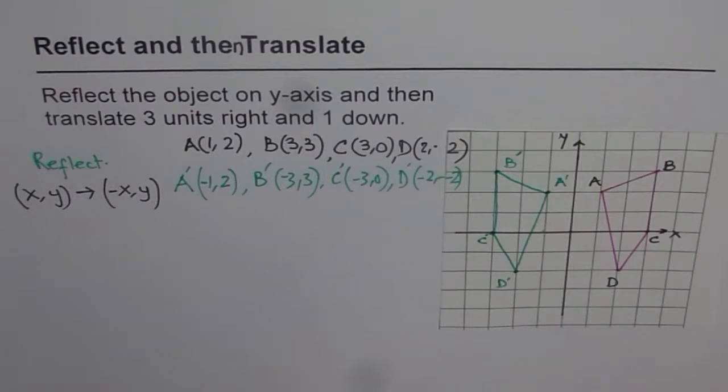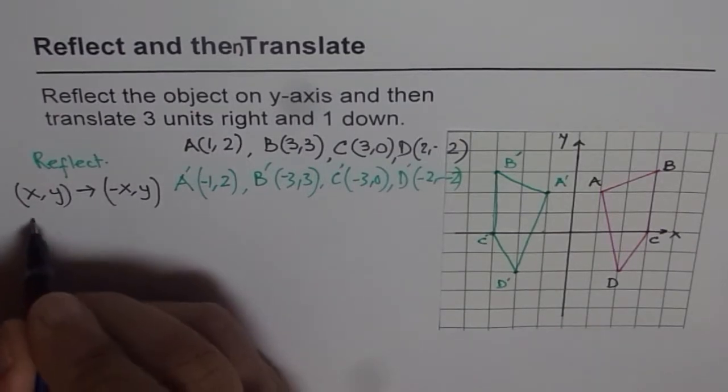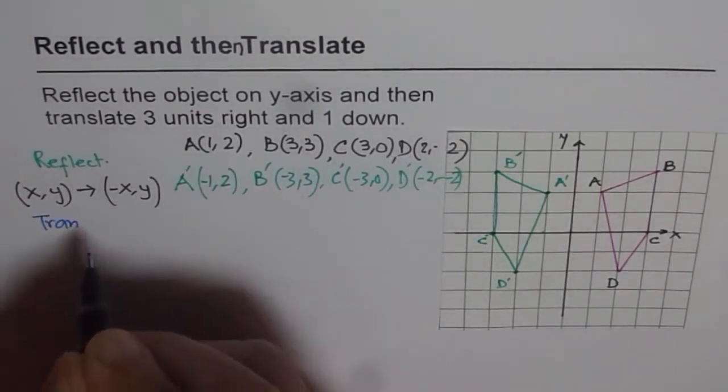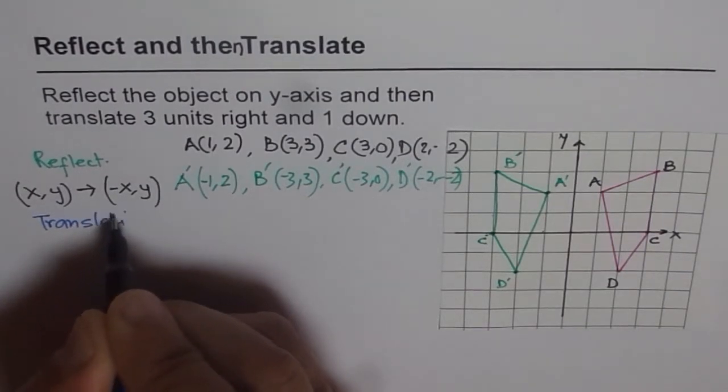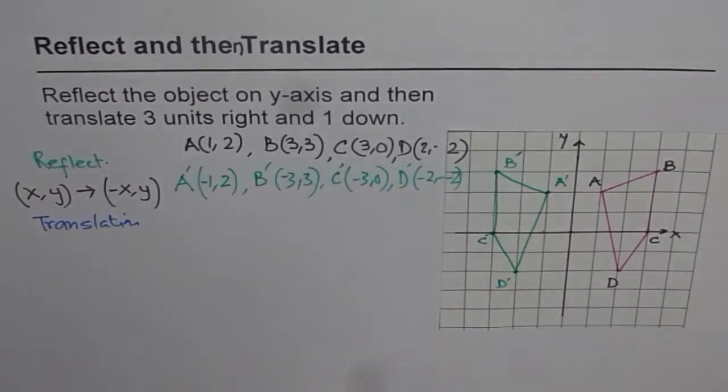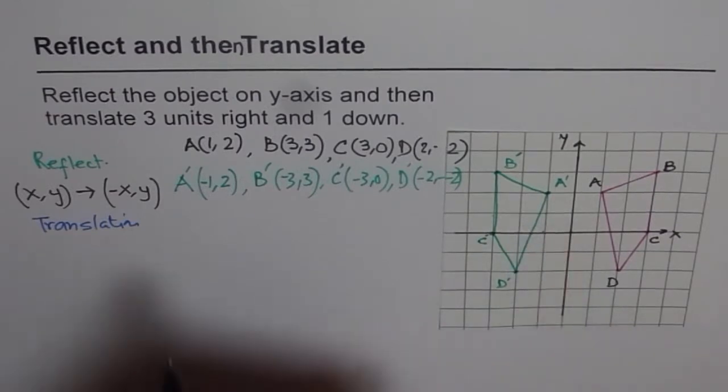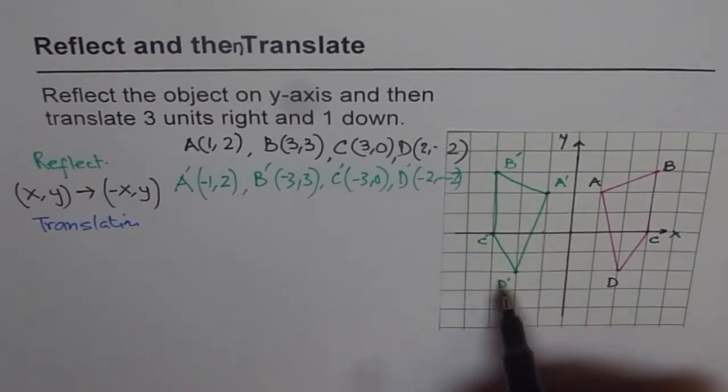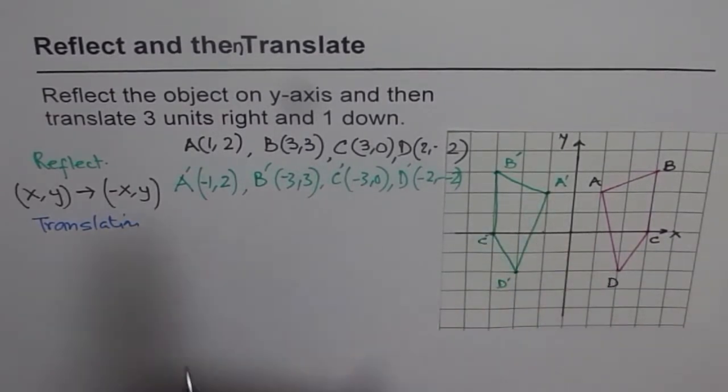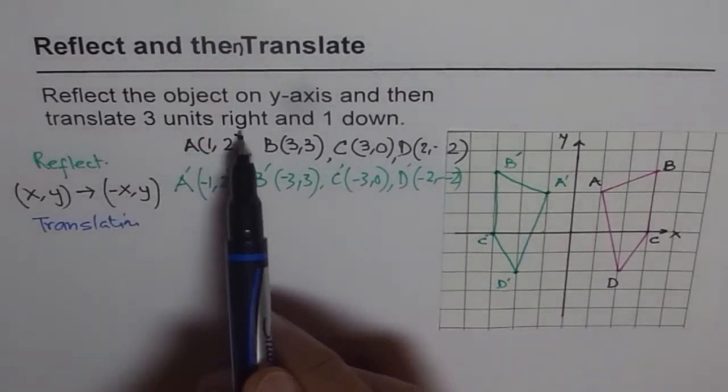Now the second part is translation. So when you do translation, then what happens? The object moves, right? But its orientation remains same. In reflection, the orientation changes. In translation, it will remain same but will move. Now let's see what happens. Three units right, one down.